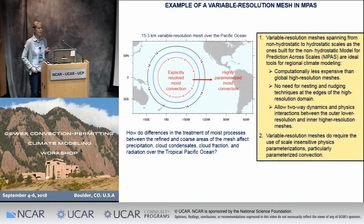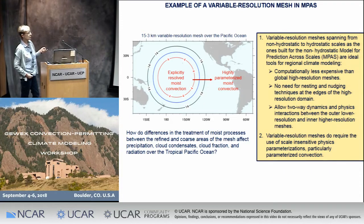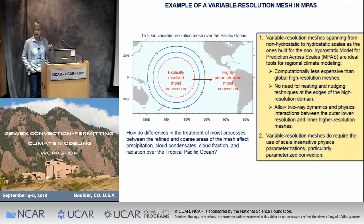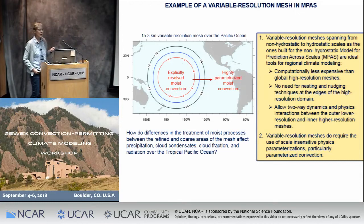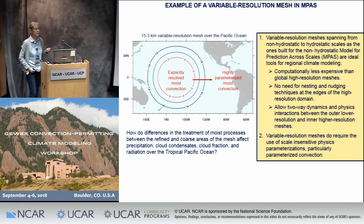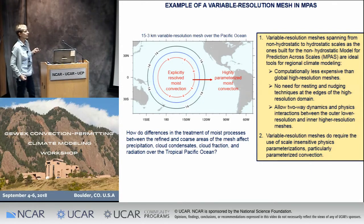Here's the mesh that I've been working with. It's a 15-to-3 km variable resolution mesh — 15 km in the coarse area of the globe, and then a refined domain with a resolution of about 3 km, centered over the central Pacific Ocean. I wanted to understand the interactions between convection, grid scale cloud macro physics, and radiation in the tropics. This is computationally less expensive than a global convective permitting mesh, and we don't have the need to nest or nudge at the edge of the refined domain. We also allow two-way dynamical and physical interactions between the coarse and refined areas of the mesh.